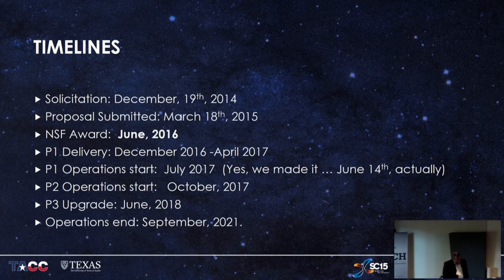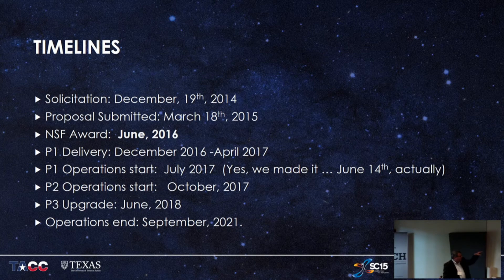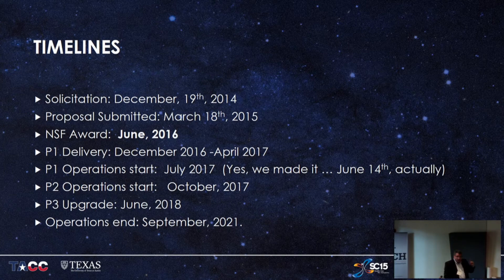These are very long processes and you have to adapt on the fly. We got a 'write this proposal in three months' letter right before Christmas in 2014. We submitted the proposal in 2015, and it was 15 months before we could admit they funded it in June 2016. Phase one delivery went from December to April, and we were scheduled for a July 1st operations start — we actually put users on and started accounting June 14th. This machine is planned to be our platform through 2021.